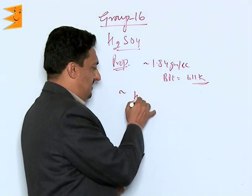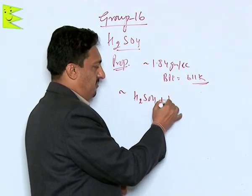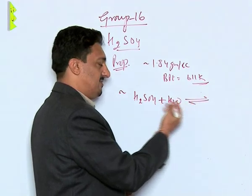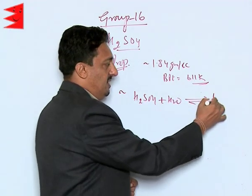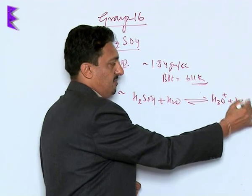When it is dissolved in water, it first forms what? It dissociates, it is a dibasic acid we know, it forms H₃O⁺ and HSO₄⁻.